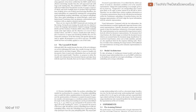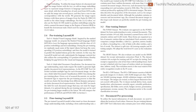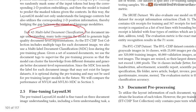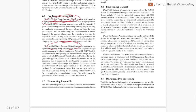To summarize: LayoutLM uses 2D position embeddings, image embeddings, and two pre-training objectives — Masked Visual Language Modeling (MVLM), which is their term for masked language modeling that also incorporates layout and visual tokens, and multi-label document classification. That's it for this paper.